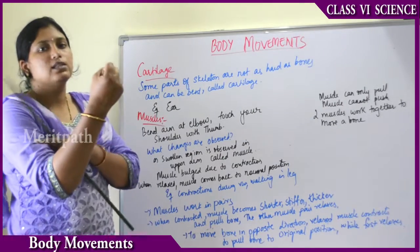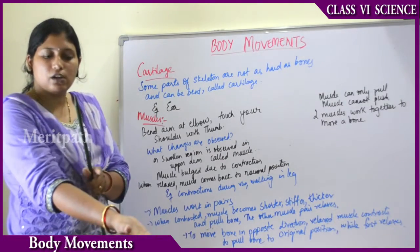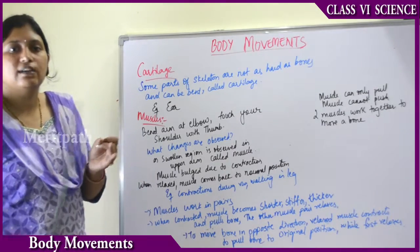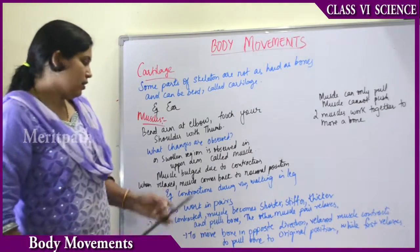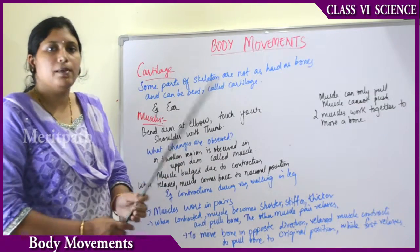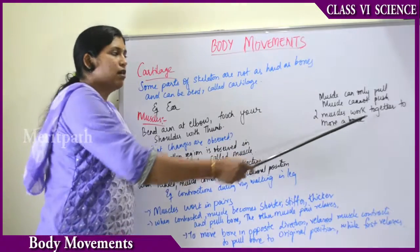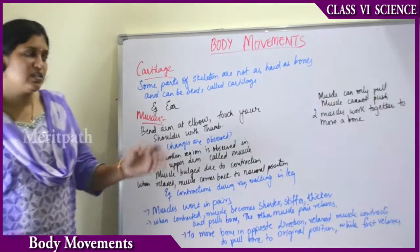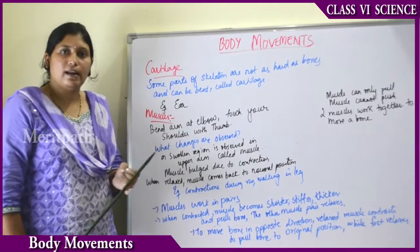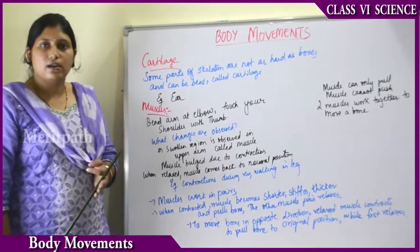If you want to bend your arm, one muscle contracts and the other relaxes. When you go back to the original position, the first relaxes and the other contracts — it is opposite and vice versa. That is the reason muscles work in pairs. Muscles can only pull, and always two muscles work together to move a bone. This is how muscles help in movement.